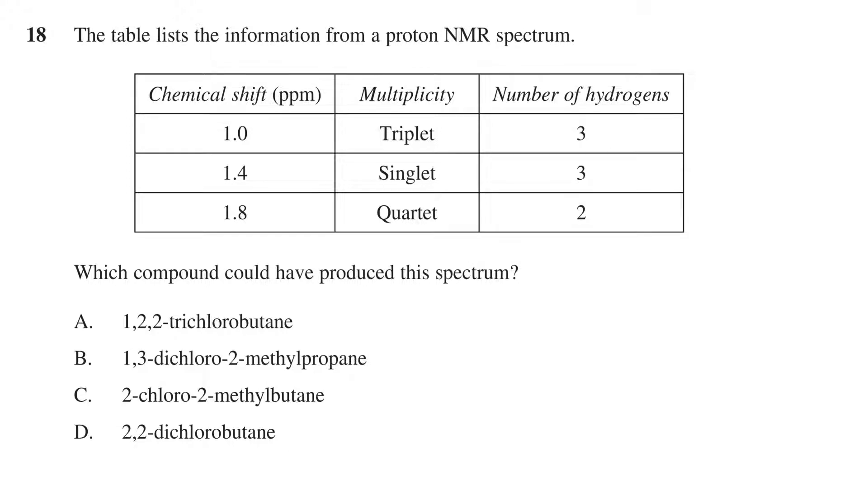The question states: the table lists the information from a proton NMR spectrum. This is followed by a table containing three rows for each signal, with the chemical shift in parts per million, the multiplicity of the signal, and the number of hydrogens. The question then asks, which compound could have produced this spectrum? Followed by four options of organic chemicals.